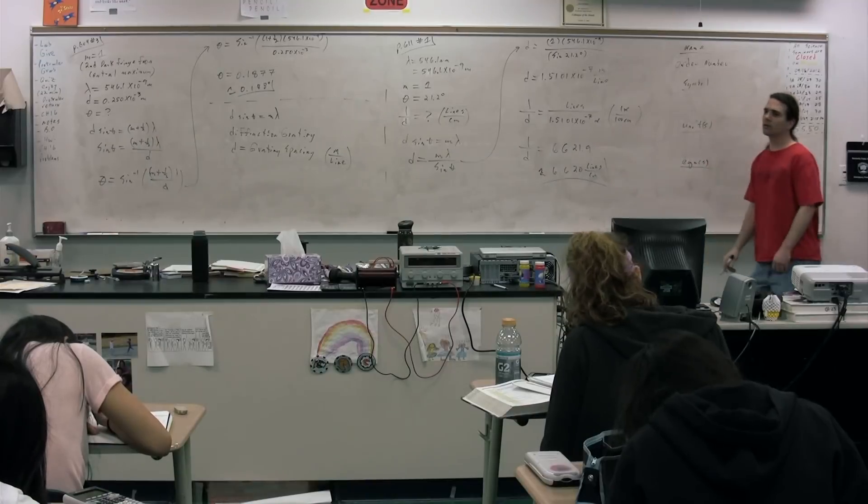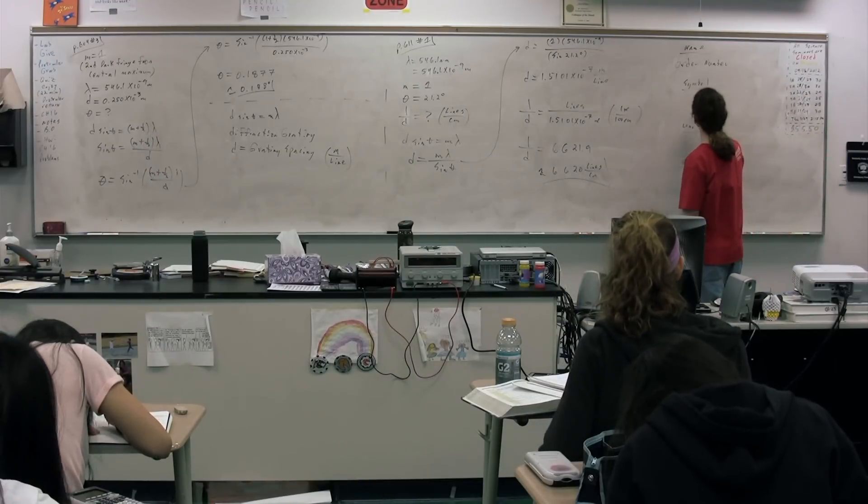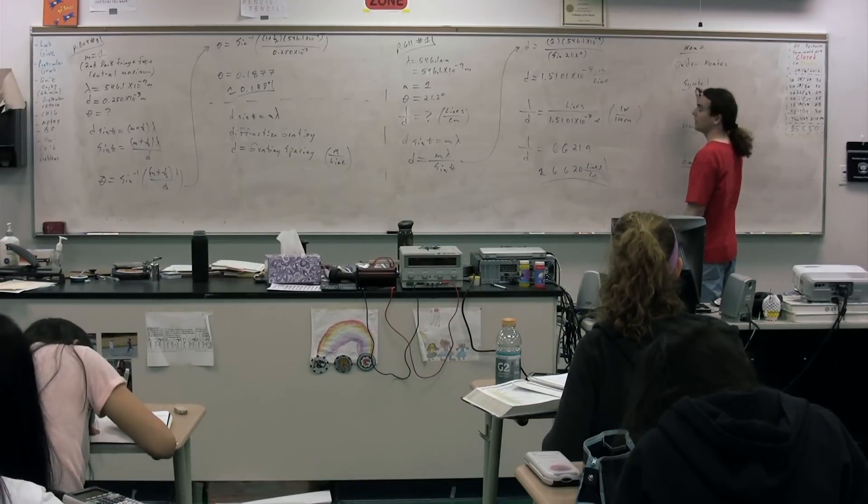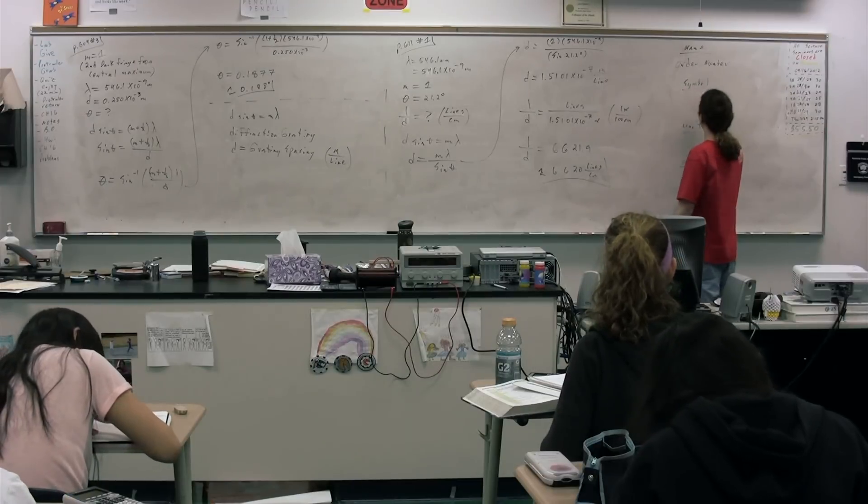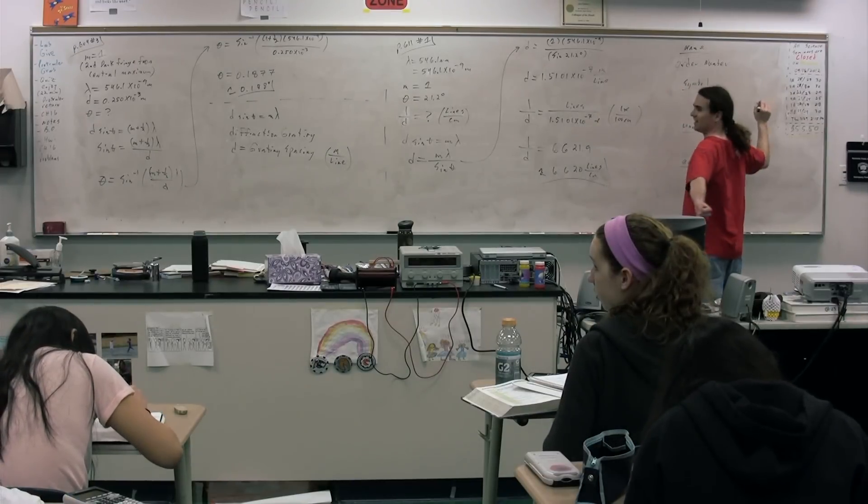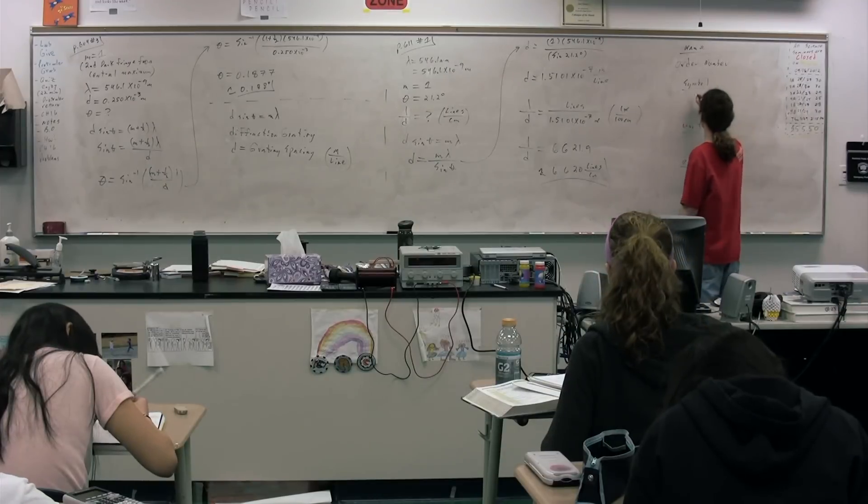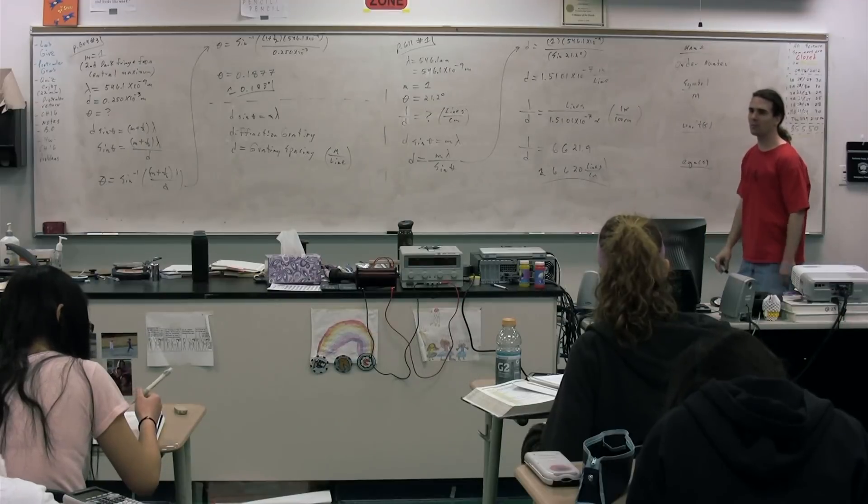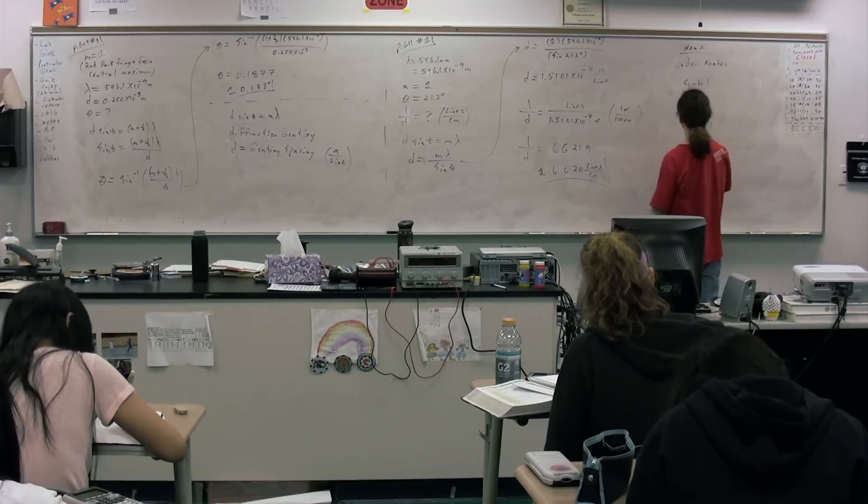Symbol for order number. Charles? M. Lower case or upper case? Lower. Lower case. Dimensions on order number. Richard? None. There are none.